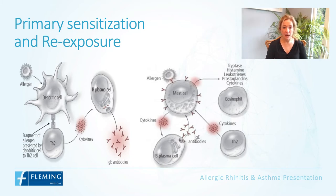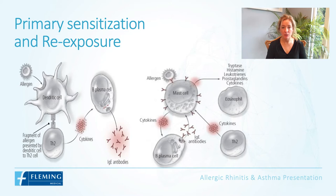These cytokines act on the B plasma cell to activate it and allow it to produce specific grass pollen IgE antibodies. These antibodies then move into the lymphatics and bloodstream, attaching to the outside of effector cells — the mast cells or basophils.